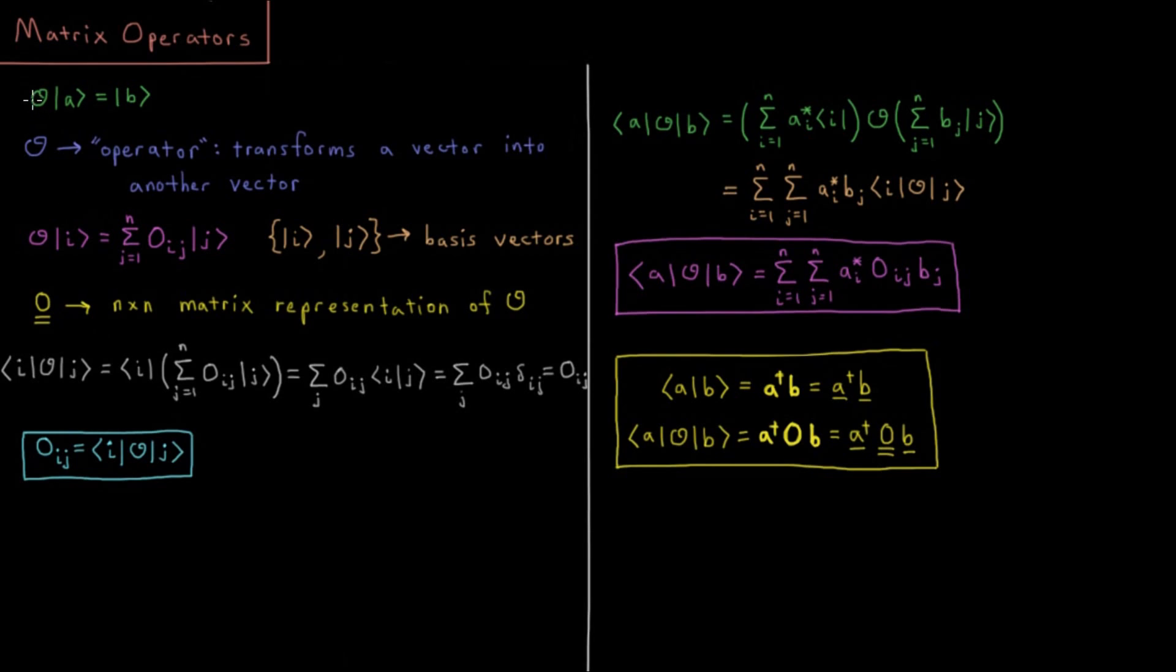So let's define some operator which we call O. This operator is going to act on ket vector A and the result is going to be a new vector B. We define an operator as something that transforms a vector into another vector.